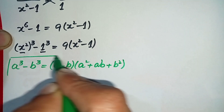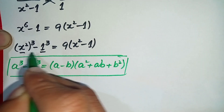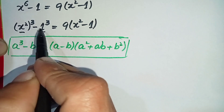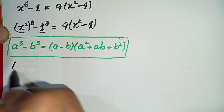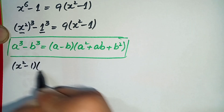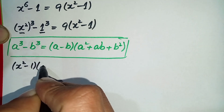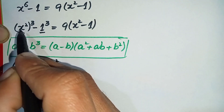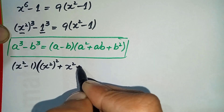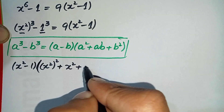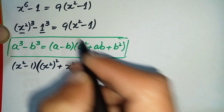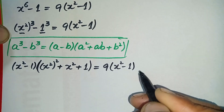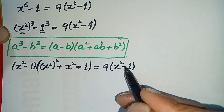Using this cubic algebraic identity on the left hand side, where a is x squared and b is 1: it becomes (x squared minus 1) times (x squared whole squared plus 1 times x squared plus 1 squared). Simplifying: (x squared minus 1) times (x to the power 4 plus x squared plus 1), equal to 9 times (x squared minus 1).